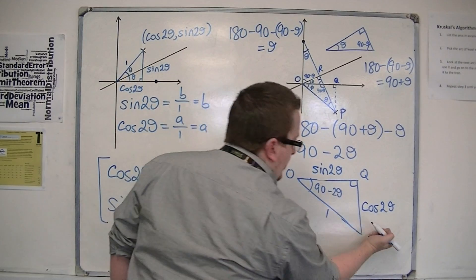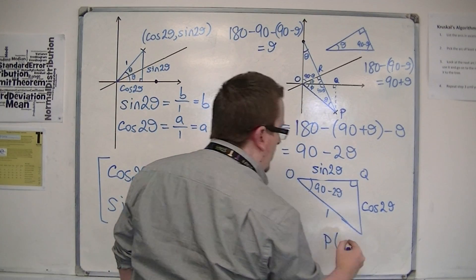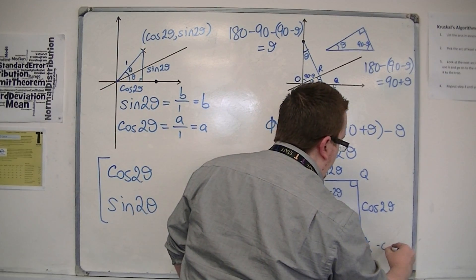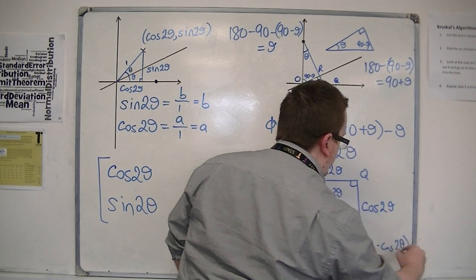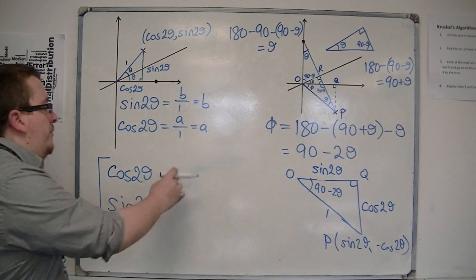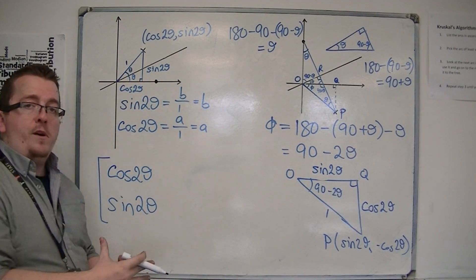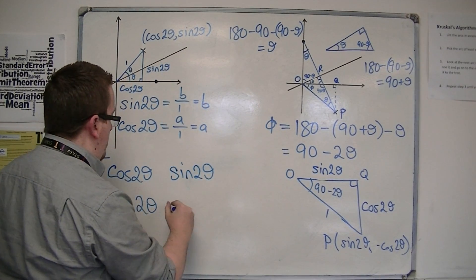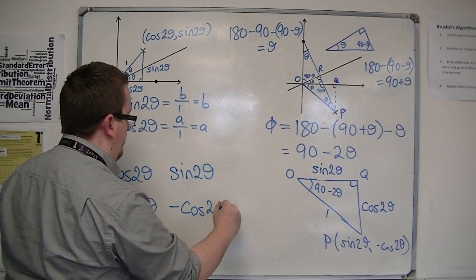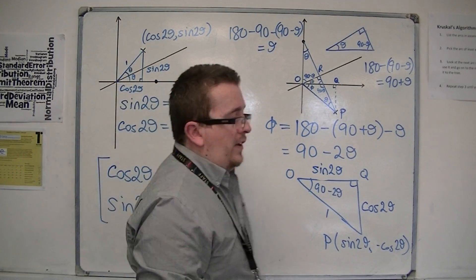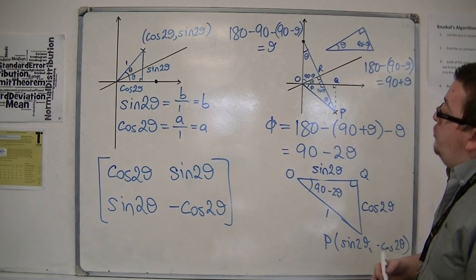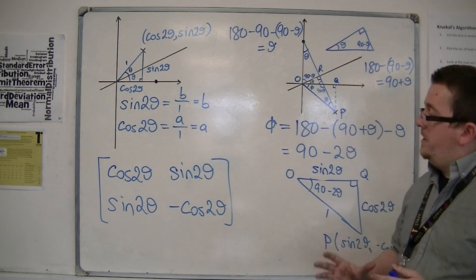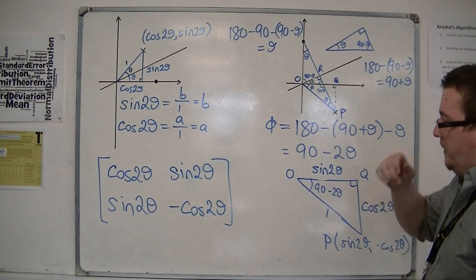And so the coordinates of P is actually sine of 2 theta, minus cos of 2 theta. And that gives me the second column of my matrix: sine of 2 theta, minus cos of 2 theta. And so it's a convoluted method of trying to find the coordinates of P. There may be an easier way of doing it, but it was a little bit of a struggle to do it on the board.